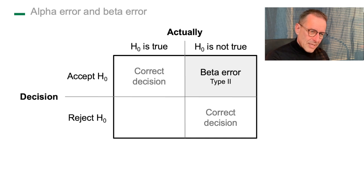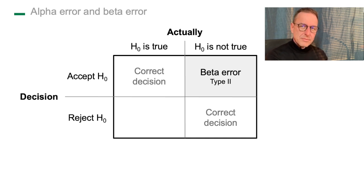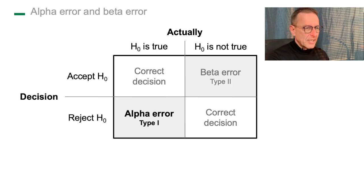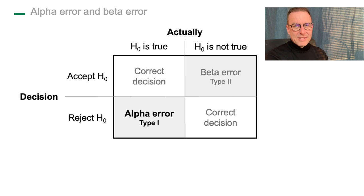One mistake is that we accept that there is nothing — we accept there is no difference between men and women — but in reality there is a difference. That's the beta error, error type two. What we focus on is the alpha error: we reject the null hypothesis, we say there is something, there is a difference, there is an effect — while in fact there is nothing. This is the alpha error — rejecting something while there is nothing in reality.